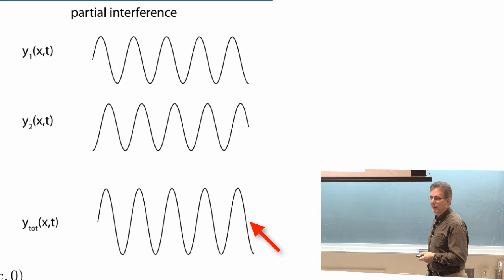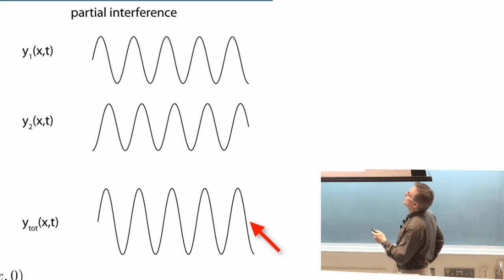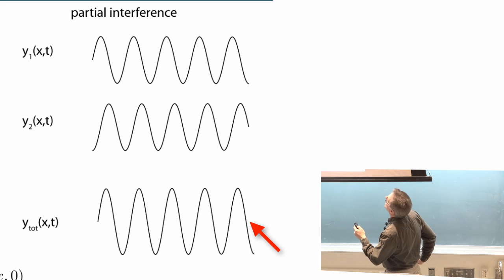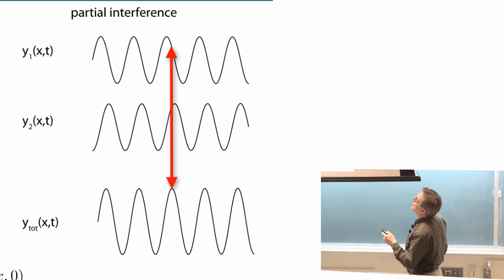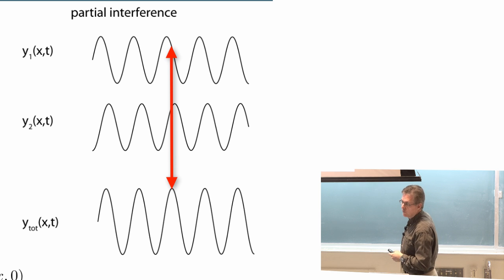When they add together you get this wave here. OK, graphically that kind of makes sense. The peaks of this one are bigger than either of these two, but not quite twice as big as these two, since they're not completely in phase with each other. And if you look at where the maxima are occurring, it's sort of in between the two maxima of the two waves that add. That kind of makes sense intuitively too.